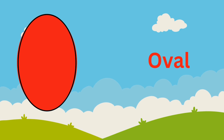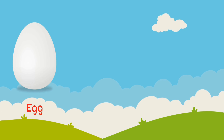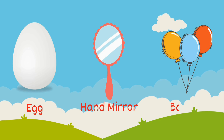Oval. An oval looks like an elongated circle. It doesn't have any sides or corners. Objects which are oval in shape are egg, hand mirror, and balloon.